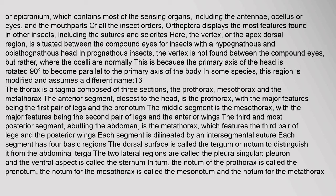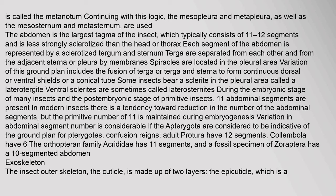Each segment has four basic regions: the dorsal surface is called the tergum or notum; the two lateral regions are called the pleura; and the ventral aspect is called the sternum. The notum of the prothorax is called the pronotum, the notum for the mesothorax is called the mesonotum, and the notum for the metathorax is called the metanotum. The abdomen is the largest tagma of the insect, typically consisting of 11–12 segments, and is less strongly sclerotized than the head or thorax.